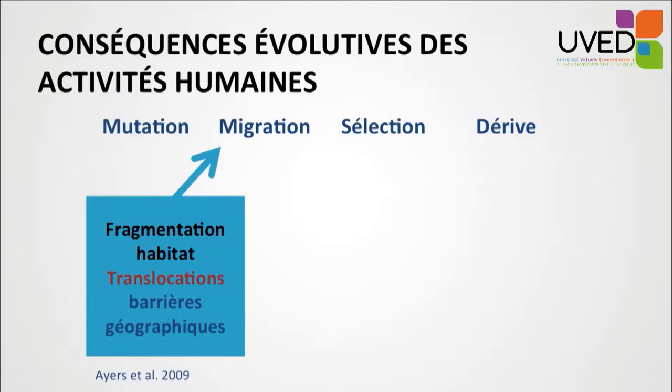Migration is the gene flow between populations belonging to the same species or biological communities. Gene flows will be influenced negatively by habitat fragmentation, but may also be amplified by the neutralization of natural geographical barriers or the introduction of new species by man, creating new flows of genes that did not previously exist.